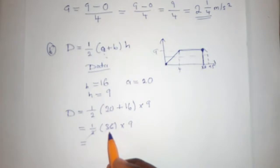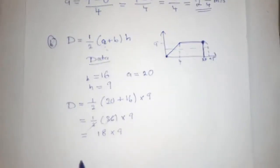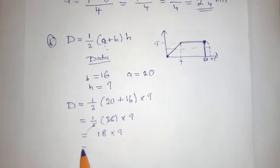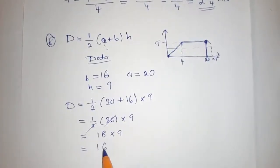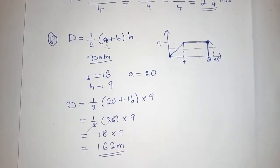How many times can 2 go into 36? 18 times. 18 times 9, our answer would be equal to 162 meters. Remember to put the units. So this is our answer. We go to the next question,